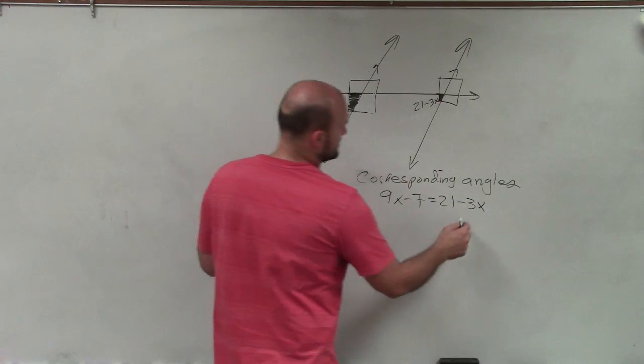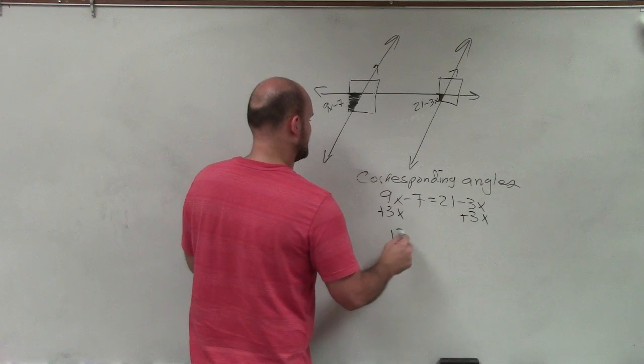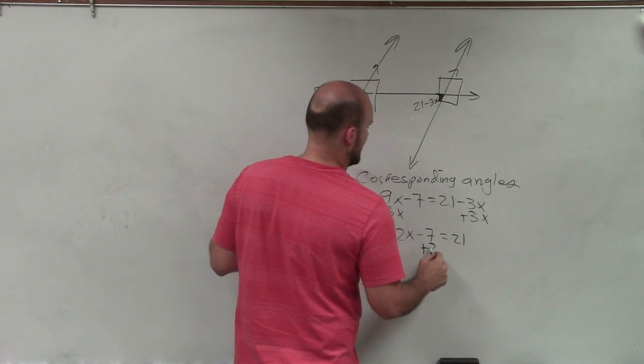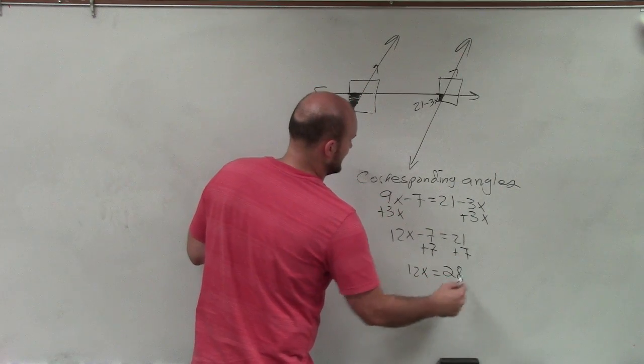Now I just need to get the x's to the same side, so add 3x, add 3x, and therefore I get 12x minus 7 equals 21, add 7, add 7, 12x equals 28.